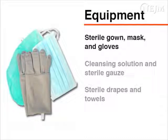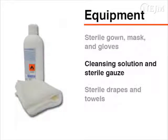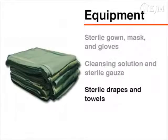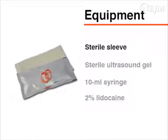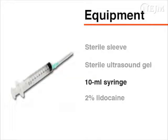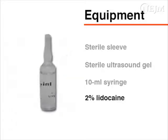To prepare the patient's skin, you will need a cleansing solution such as 2% chlorhexidine and sterile gauze. You will also need sterile drapes and towels, a sterile sleeve to cover the ultrasound probe, and sterile ultrasound gel. To provide local anesthesia, you will need a 10 milliliter syringe filled with 2% lidocaine.